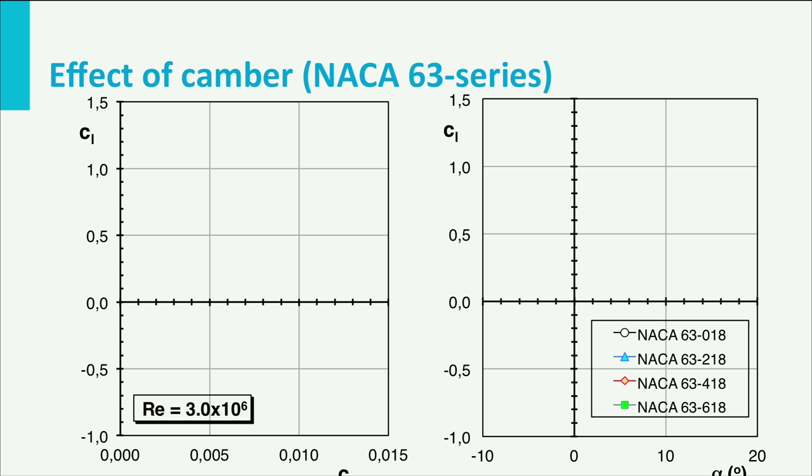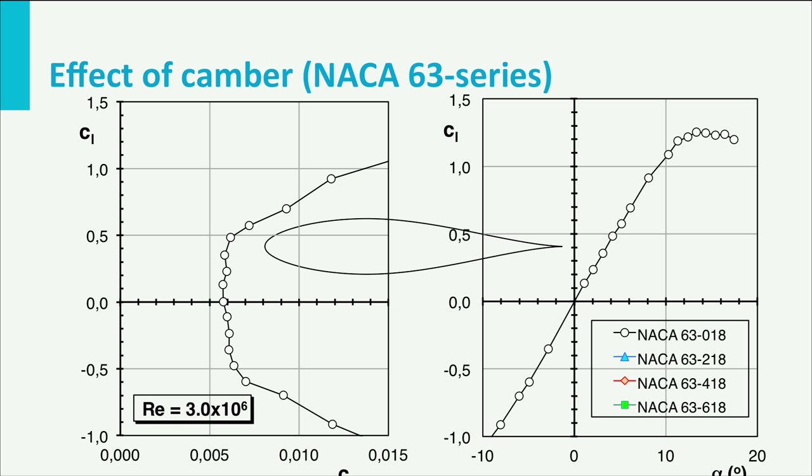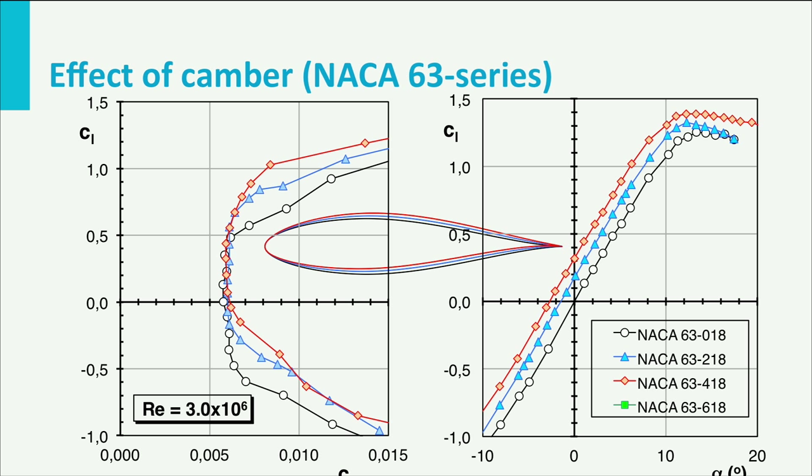The next slides show the impact of the camber line on the performance of a 63 series airfoil with a thickness of 18%. For clarity, the index in the airfoil name after the 3 has been omitted. With increasing camber starting from a symmetric airfoil, denoted by the 0, 2, 4 and 6 in the airfoil names, the lift curve shifts upward. The lift gradient remains approximately constant.